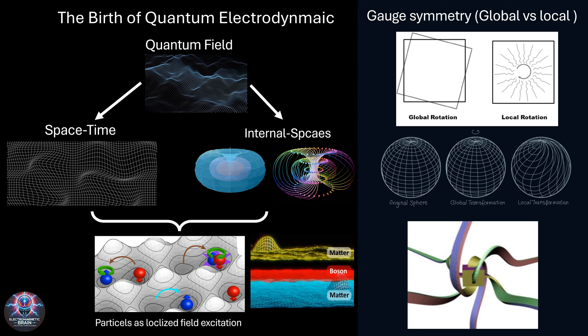This concept doesn't stop with electromagnetism. The idea of gauge symmetry extends to all fundamental forces in the universe, the weak force, the strong force, everything in the standard model. In the end, what we call reality is just the surface of something far deeper, a world where fields, symmetries, and quantum interactions form the true building blocks of existence. And it all begins with the birth of quantum electrodynamics.